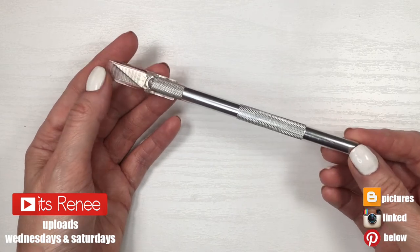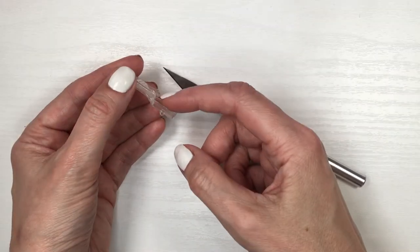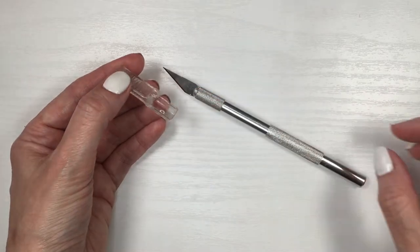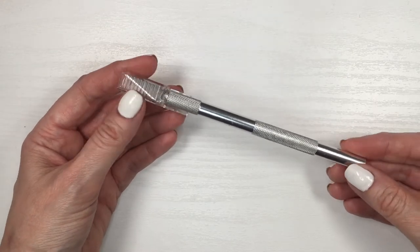Hey guys, it's Renee. So I have this Exacto knife and the cap - I kind of dropped it and that plastic bit on the side just broke. It doesn't really close properly, it's always kind of open.